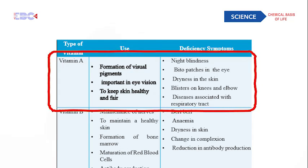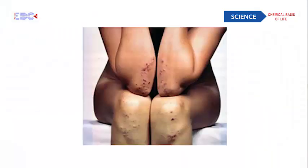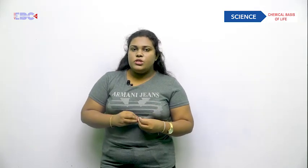Further deficiency symptoms of vitamin A include bitter patches in the eye, which you can clearly see in the given picture. There is also dryness of the skin — your skin becomes dry due to a lack of vitamin A — blisters on the knees and elbows, as shown in the picture, and diseases associated with the respiratory tract.